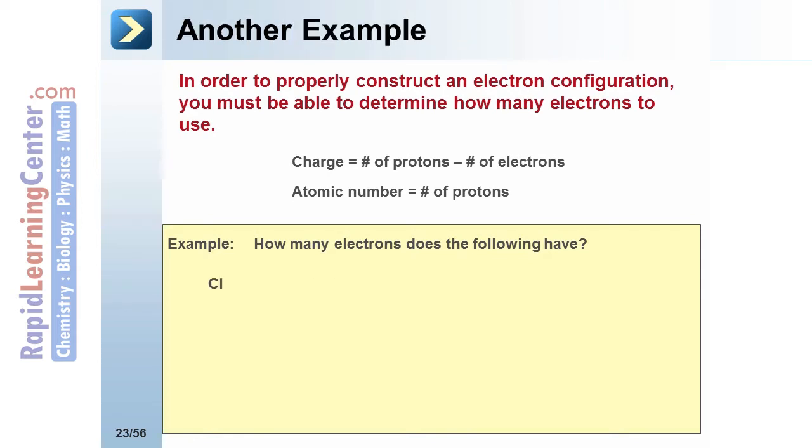Another example is chlorine. Since no charge is written, it is assumed to be 0. The atomic number for chlorine is 17. Zero equals 17 minus electrons. There are 17 electrons in a chlorine atom.